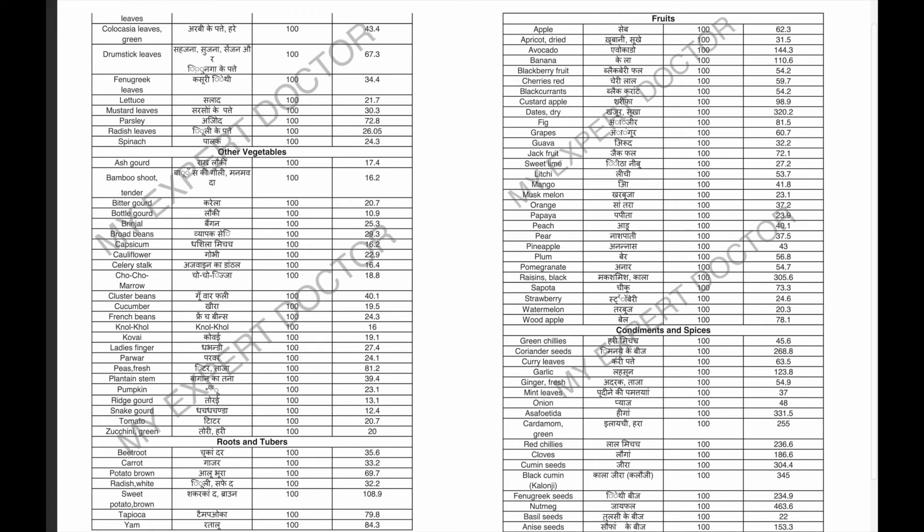If you have consumed high calories at breakfast — like aloo paratha or a cheese sandwich — you can compensate by cooking something lower in calories for lunch or dinner, such as daliya khichdi or moong dal khichdi. This way you will never exceed your daily calorie requirement, which will help keep your weight gain under check.